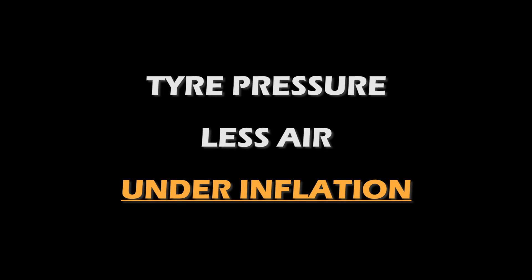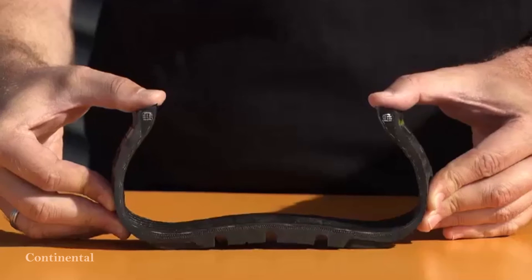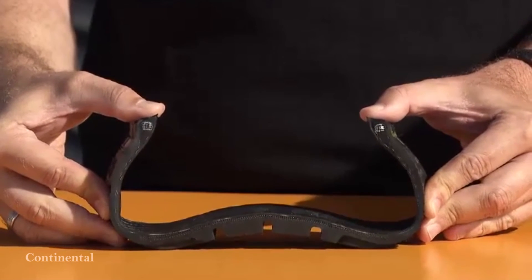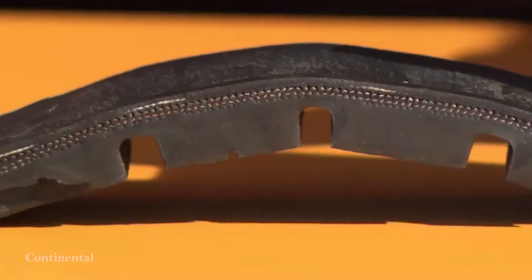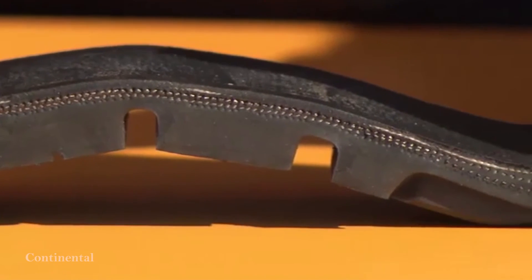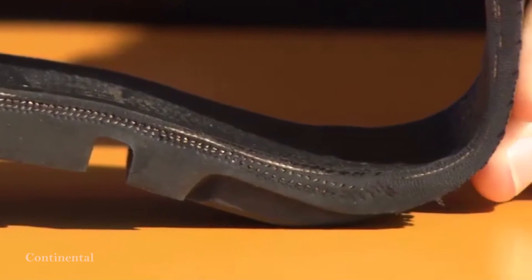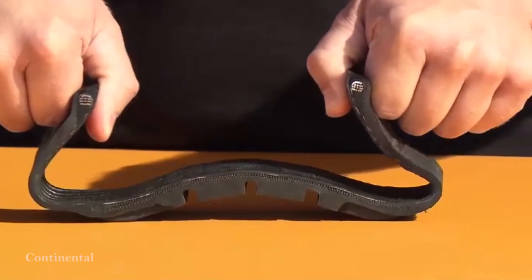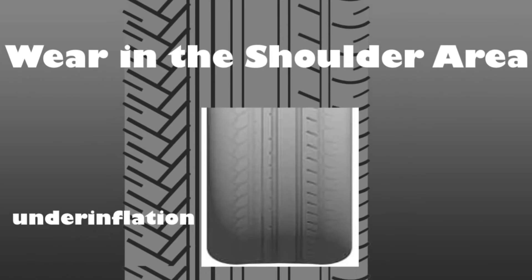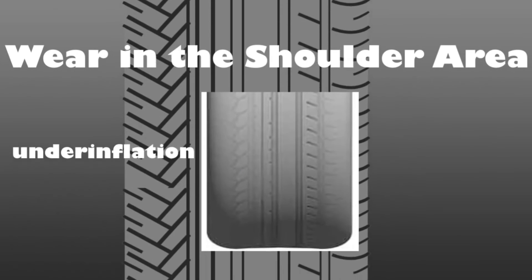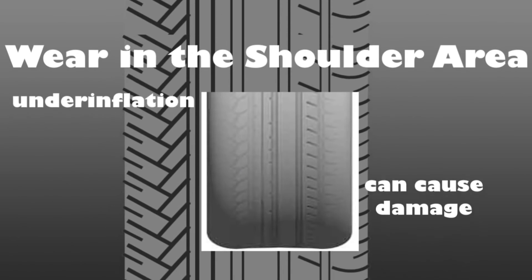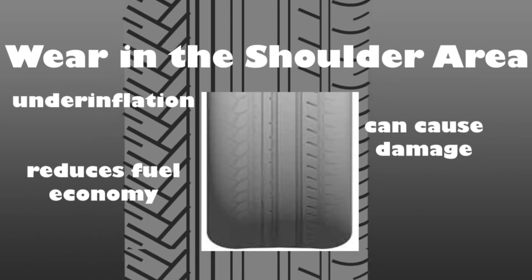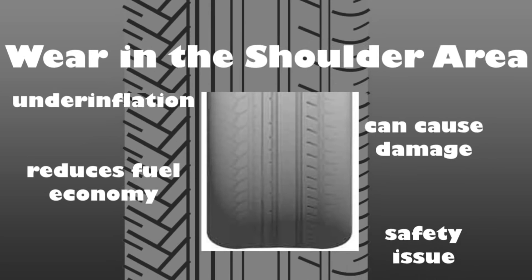Underinflation happens due to less air pressure in the tire. The tire is pressed down too much because of the car's weight and rests on its shoulders. The center area of the tire lifts up, causing less grip on the road, and only the shoulders are not able to get enough control. A tire wear in the shoulder arc can be observed. It is a main reason behind tire wall cuts, tire punctures, and sudden loss of control at high speeds.